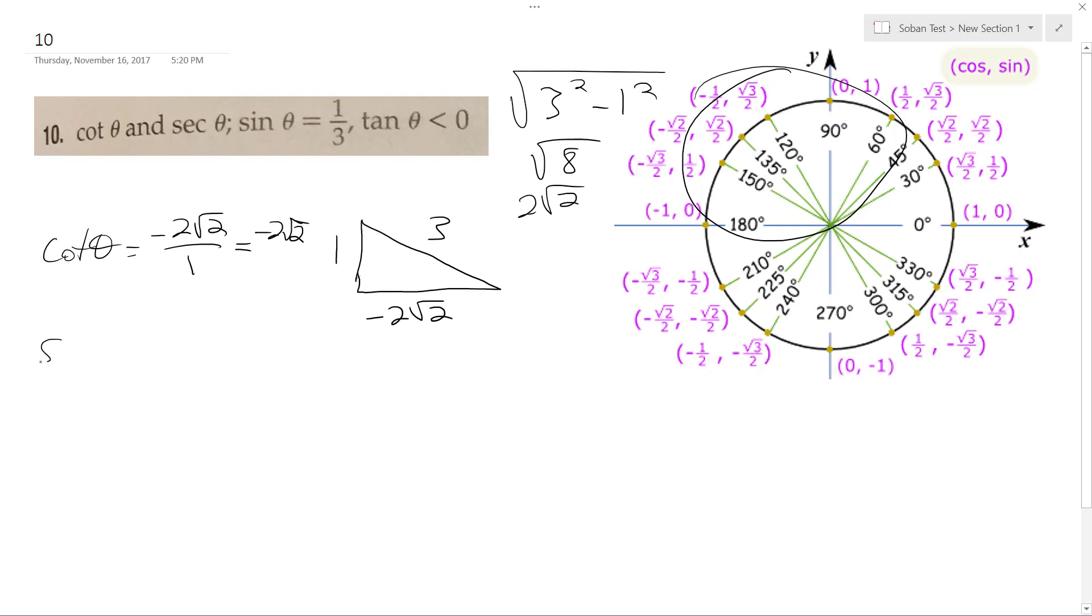And then secant theta is equal to hypotenuse over adjacent, so 3 over negative 2 root 2.